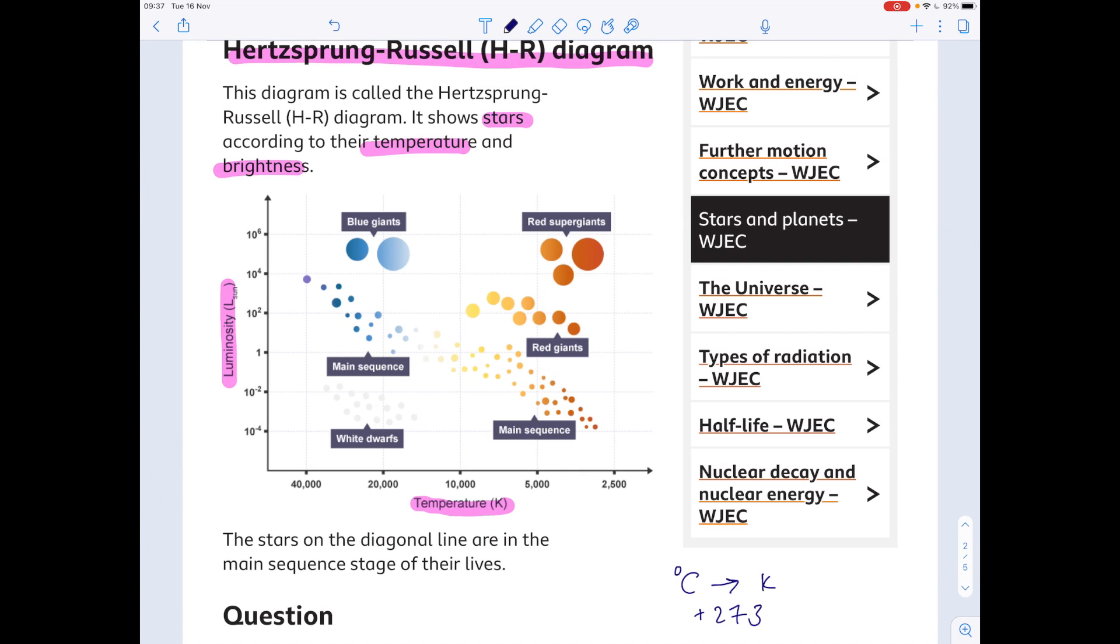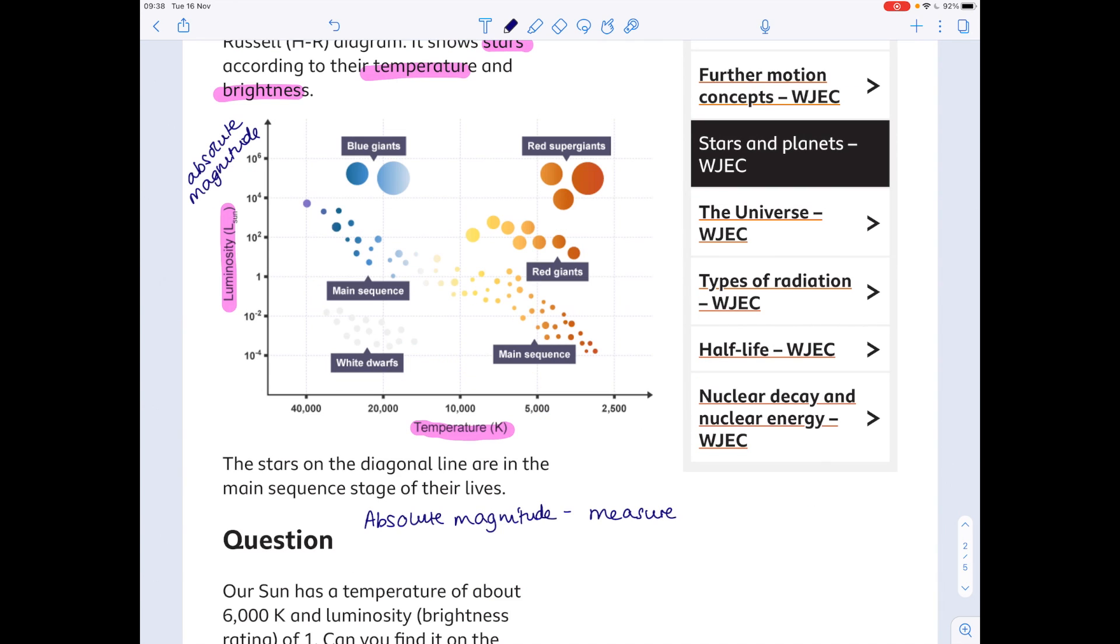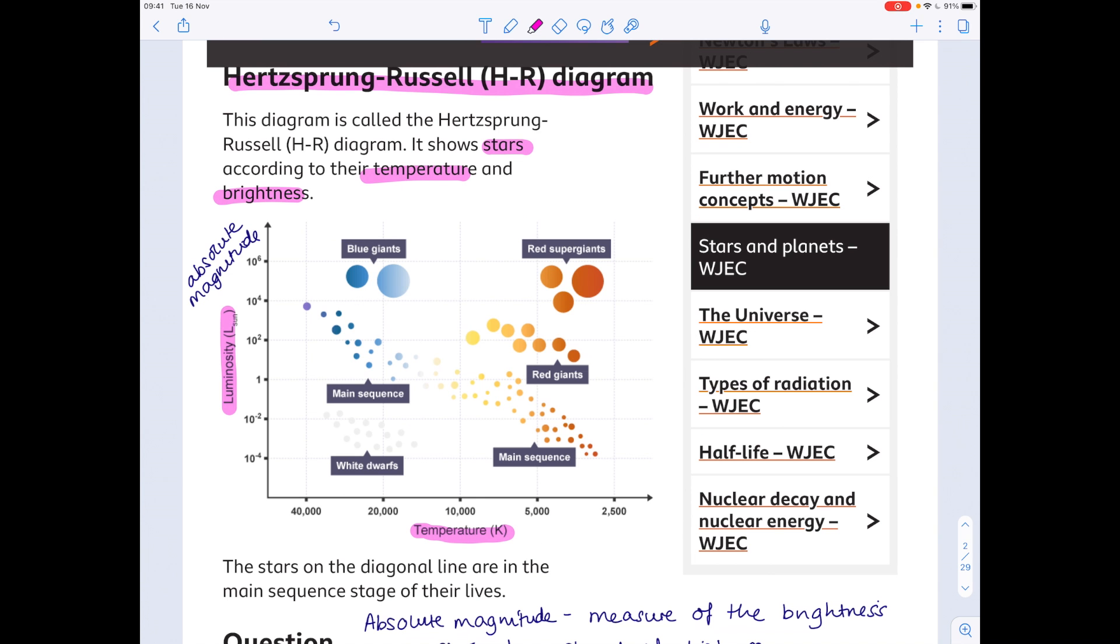You might also see the y-axis described as absolute magnitude. And if you're asked what absolute magnitude is, well, it's a measurement of the brightness of a star at a standard distance. One other thing I wanted to point out is that you could also see on the x-axis colour as opposed to temperature. Remember that the colour of a star indicates its temperature as well.